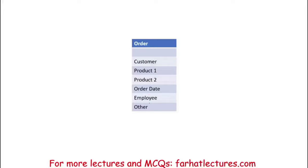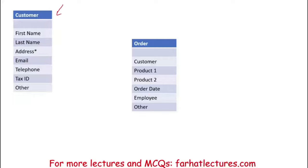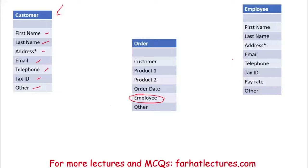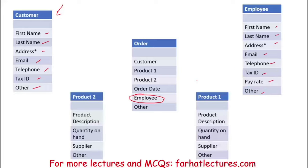For every customer, we're also going to create a customer table with the first name, last name, address, email, telephone number, tax ID, and whatever we need to collect about that customer. We're also going to have a table for each employee — employee first name, last name, address, email, telephone, tax ID, how much we're paying them, emergency contact, and so on. And for each product, we're going to create a product table with product description, how many we have on hand, who's the supplier, and who's the purchasing agent. Companies could have hundreds of products.